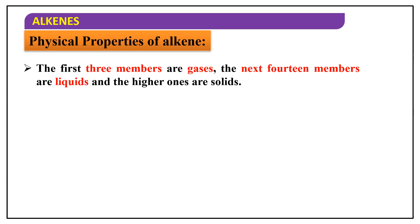The first three members of alkenes — ethene, propene, and butene — are gases. The next 14 members are liquids and the higher ones are solids. So you can clearly see that with the increase in the number of carbon atoms, their state will change.